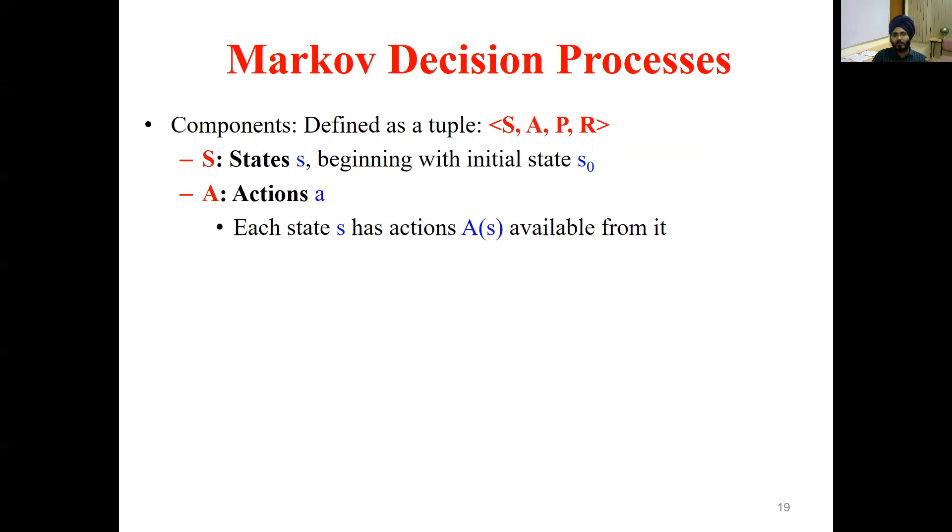A is the set of actions, all possible actions that you can think of taking over states. That means action is applicable over a state. You will be on a state, you will be applying an action. What is the outcome of applying an action? I will be moving to some other state. Or I may be on the same state itself as a self move.